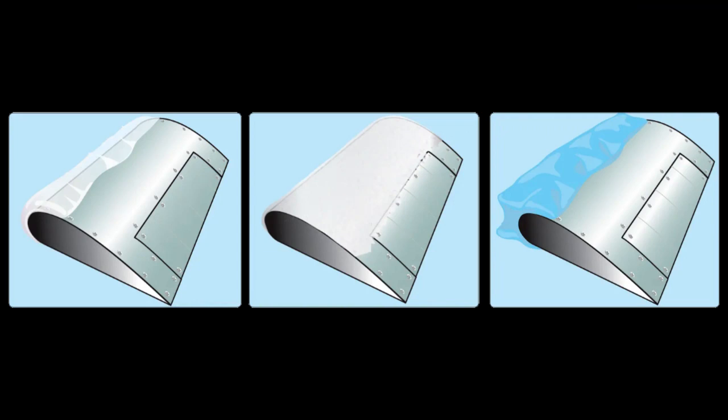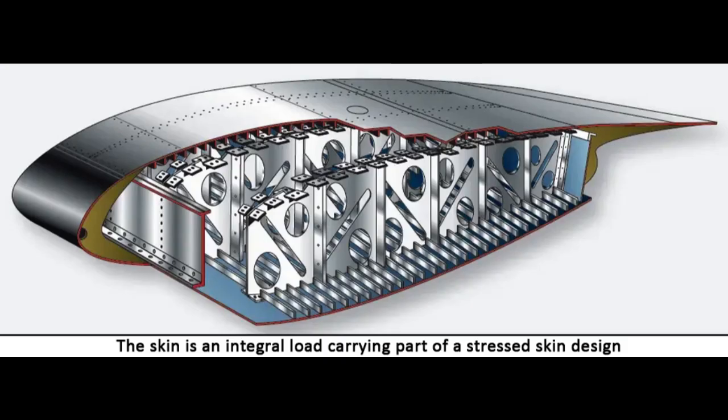To prevent ice from forming on the leading edge of the wings of large aircraft, hot air from an engine is often channeled through the leading edge from wing root to wing tip. A louver on the top surface of the wing tip allows this warm air to be exhausted overboard. Wing position lights are located at the center of the tip and are not directly visible from the cockpit. Some wing tips are equipped with a lucite rod to transmit the light to the leading edge as an indication that the wing tip light is operating.